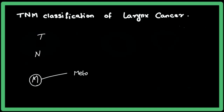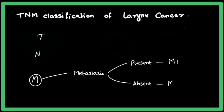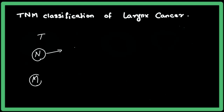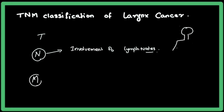M in TNM stands for metastasis. If metastasis is present, it is given as M1; if absent, it is M0; and if unknown, it is Mx. N refers to the involvement of lymph nodes.